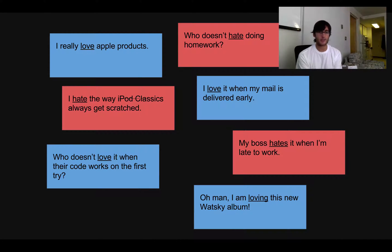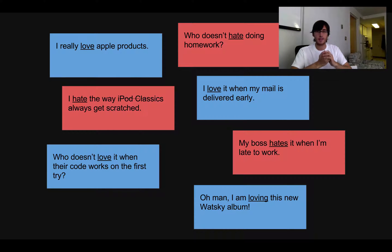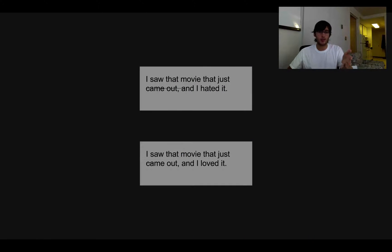If we had a Bayes classifier or any kind of classifier, it would pick up on this and realize 'love' is really important for things being positive, and 'hate' is really important for things being negative. So if I see a new sentence and it says 'love,' it's going to be positive; if it says 'hate,' it's going to be negative. And if it says both, we don't really know what to do because none of the training samples use both. But we'll get to that once we talk about the math. After training on these sentences, we would be able to show it two new sentences — one says 'hate' and one says 'love' — and it could figure out which is negative and which is positive.